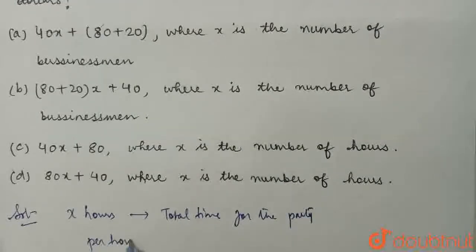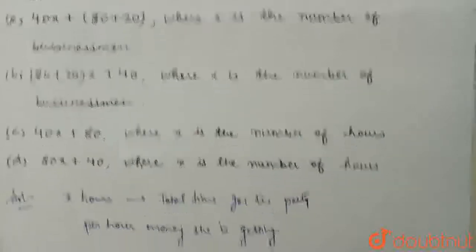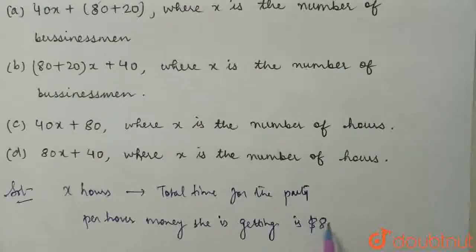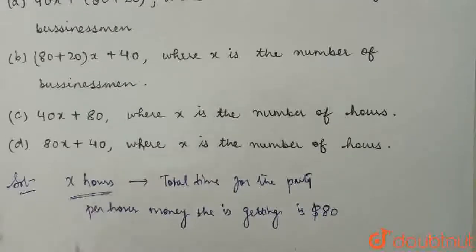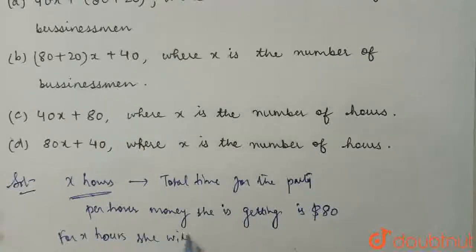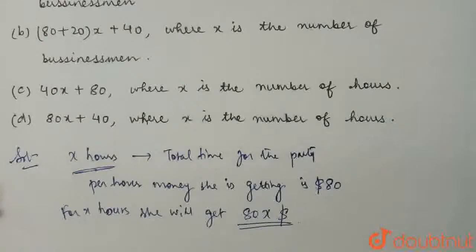Per hour she is getting $80. So for x hours she will get $80x, and an additional $40 she is getting because she is serving all the food on time.